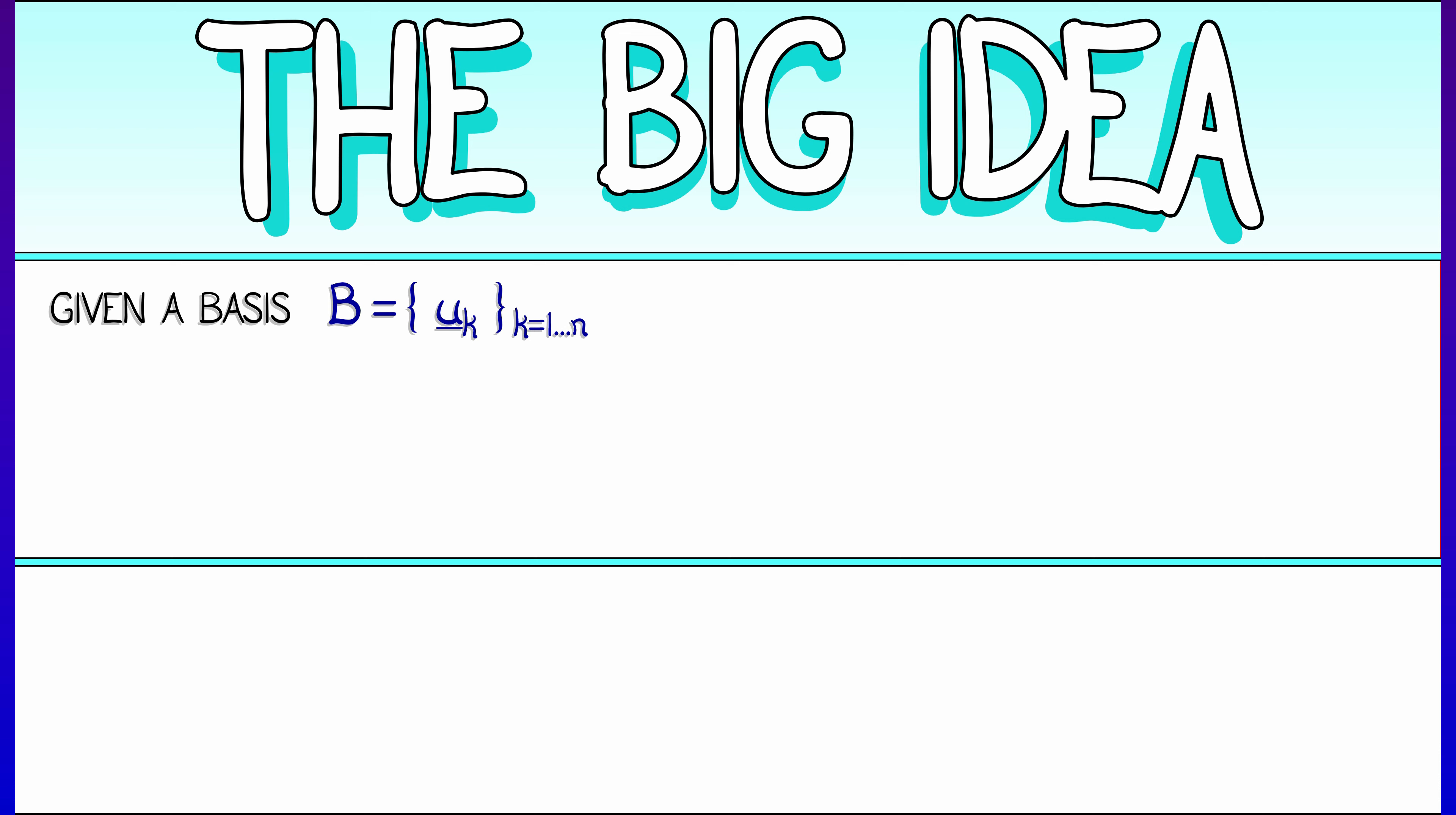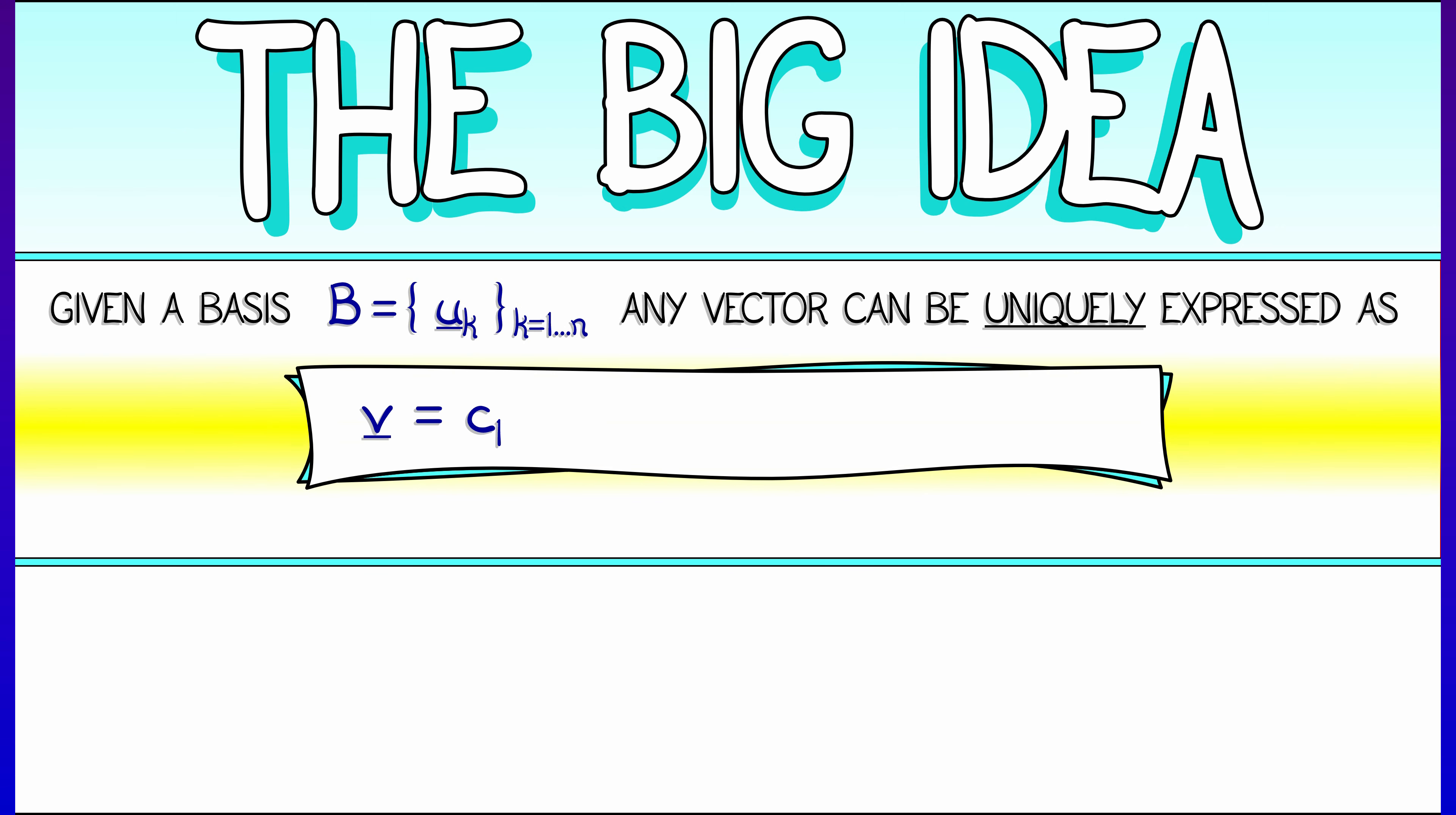And the big idea with a basis is, given those basis vectors, let's call them u sub k, k goes from 1 to n, then any vector in your space can be uniquely expressed as a linear combination of these basis vectors with some coefficients in front of them. The coefficients c sub i are called the coordinates of your vector in this basis.